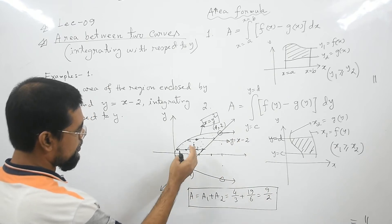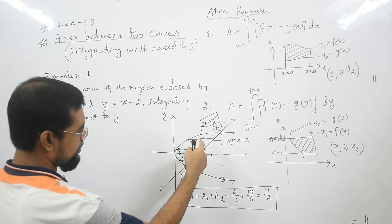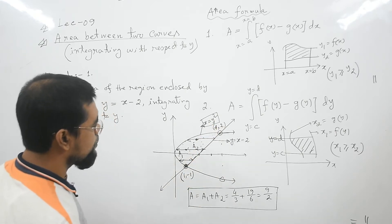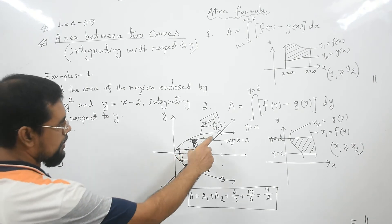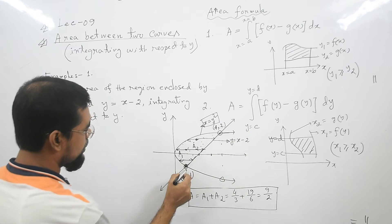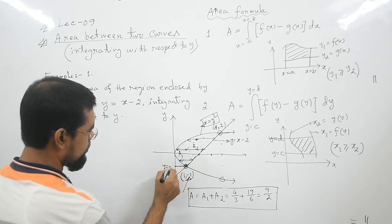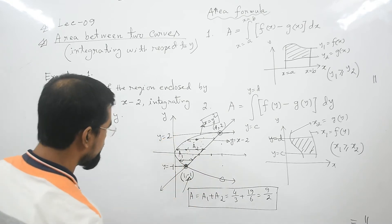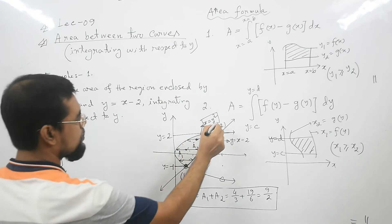We can calculate the area directly using Formula 2. The variable y starts from the lower intersection point. From our previous lecture we already calculated the points of intersection of these two curves: (1, -1) and (4, 2). So y starts at negative 1 and goes up to 2.